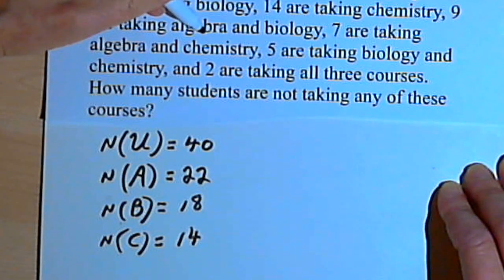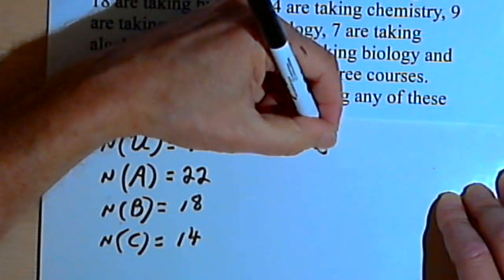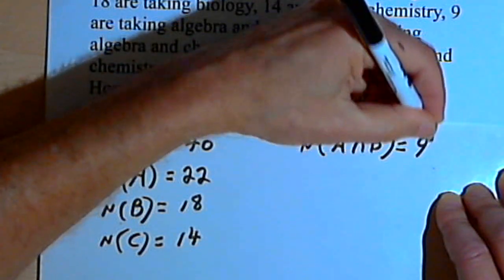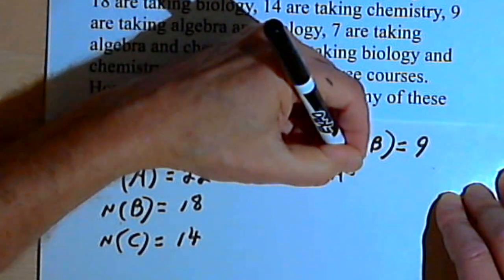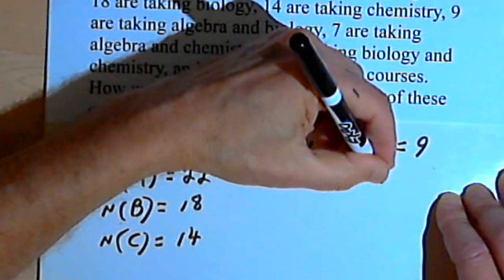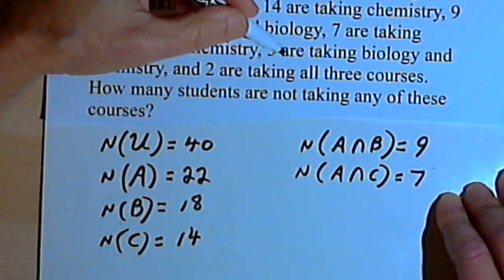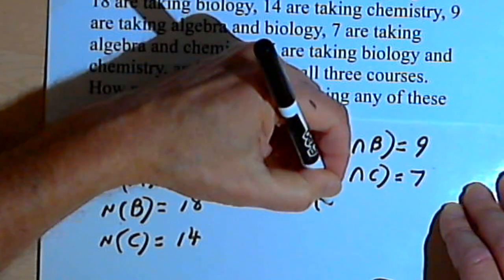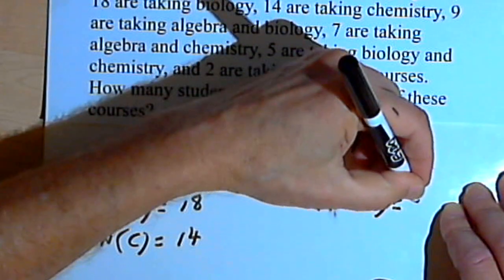9 students are taking algebra and biology, so that's the intersection of set A and B. The size of A intersect B is 9. Then I've got 7 taking algebra and chemistry, so the size of the intersection of A and C is 7. 5 are taking biology and chemistry, so the size of that intersection of biology and chemistry is 5.